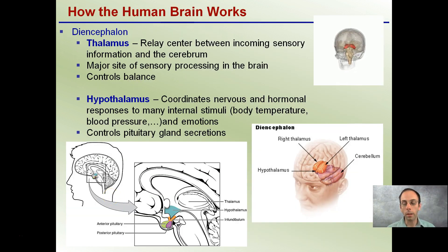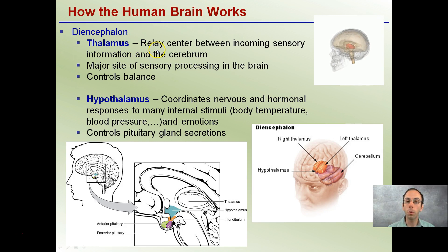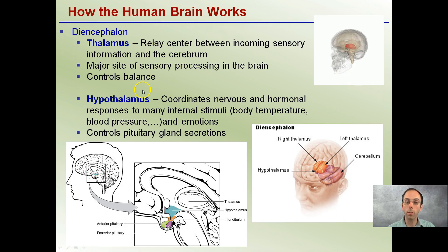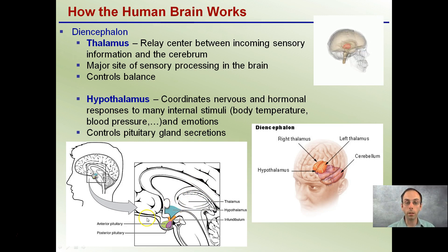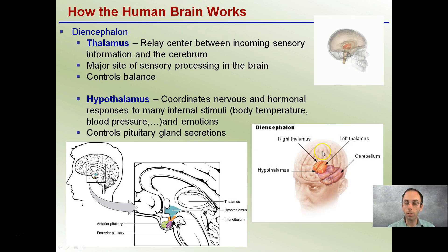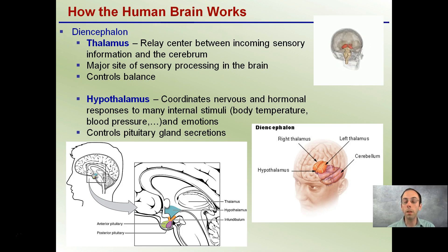We have the diencephalon region. This is composed of the thalamus, which is the relay center between incoming sensory information and the cerebrum, and the hypothalamus, which coordinates nervous and hormonal responses to many internal stimuli — such as body temperature and blood pressure — as well as emotions. It also controls the pituitary gland and its secretion. Here's our thalamus, here's our hypothalamus, and it's in direct relation to the pituitary gland. There's a right thalamus and a left thalamus and a hypothalamus. All these different regions are performing very important functions to help us maintain homeostasis.